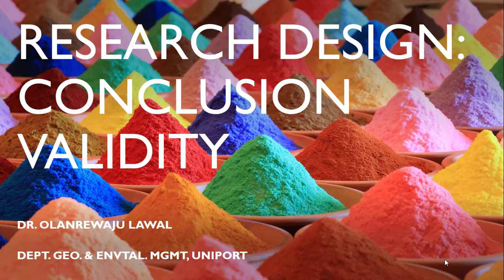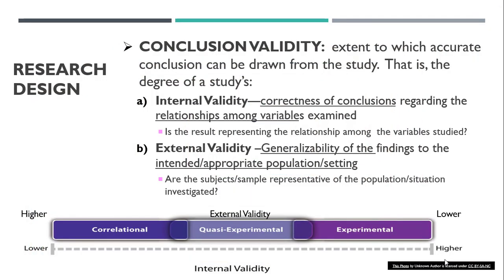Now that we have explored definitions and process, let's move on to looking at conclusion validity — a very important concept in research design. Conclusion validity means: to what extent is your conclusion accurate? Essentially, we are trying to say how accurate are your conclusions.